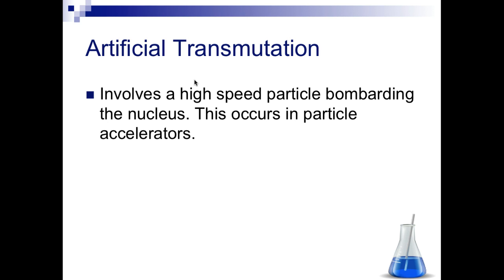Artificial transmutation involves a high-speed particle that bombards a nucleus. This occurs in a particle accelerator. So you're going to have a nucleus that's going to get hit by some particle that's moving at very fast speeds.